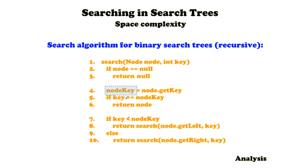Then we assign the key of the given node to nodeKey, and we're going to check whether this nodeKey is equal to the given key that we're looking for. If that's true, we're going to return the node.